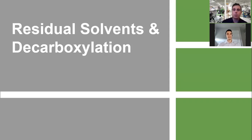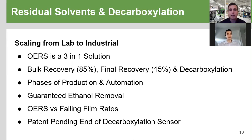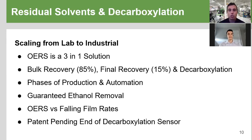Now going into residual solvents and decarboxylation — the ORS system can incorporate decarb, making it a three-in-one solution. You have your bulk recovery step where 80 to 90% (averaging around 85%) of ethanol is recovered from your oil. Then you have your final residual recovery step, and then your decarboxylation step. With our ORS solution we can automate all three of these in one system, removing the need for separate steps.